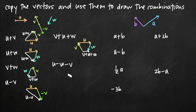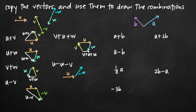For u minus w minus v, we start with u, then draw negative w — the exact opposite direction but same magnitude as w. Then we draw negative v, which we've already seen. The result, u minus w minus v, is the vector from our very beginning point to our very ending point.